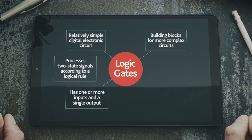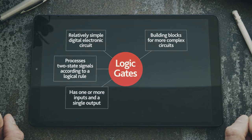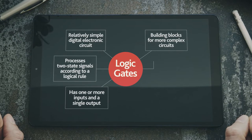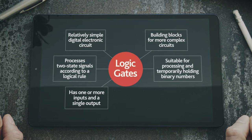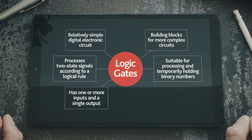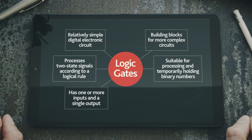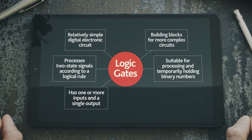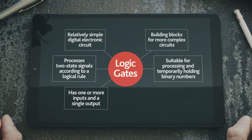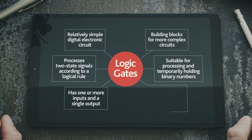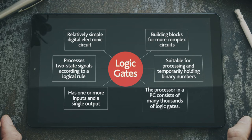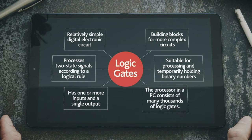As they process two state signals, it also makes them suitable for the processing and temporary holding of the binary numbers that computers use to represent numbers and text. So, as you've probably guessed, the processor in a PC consists of many thousands of logic gates.